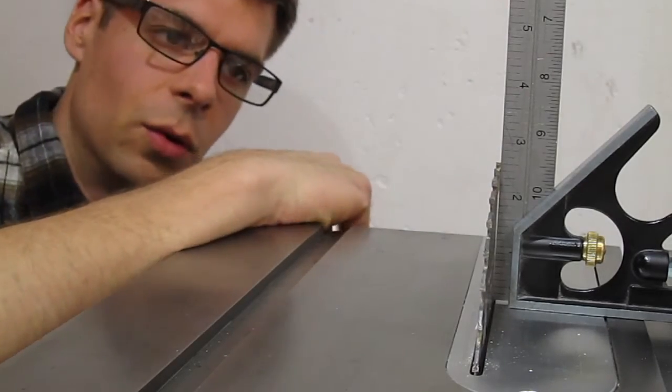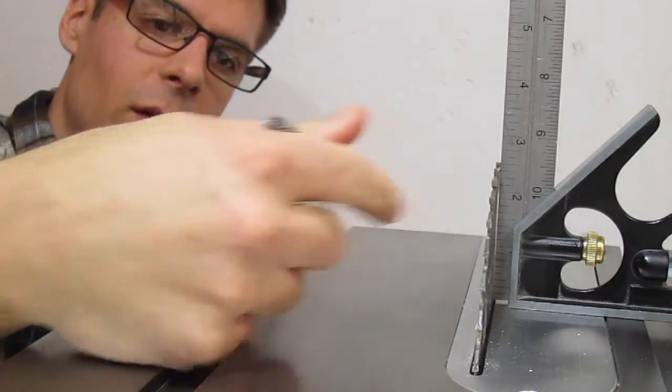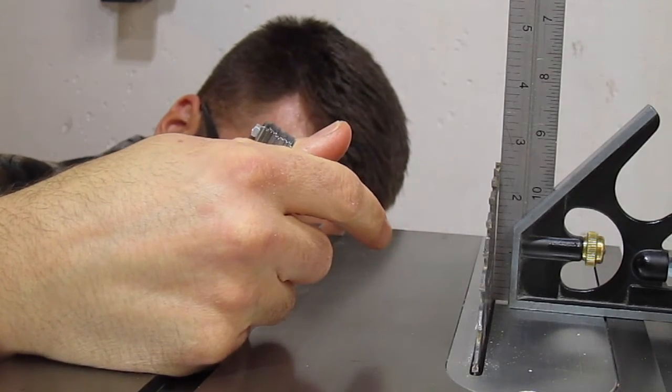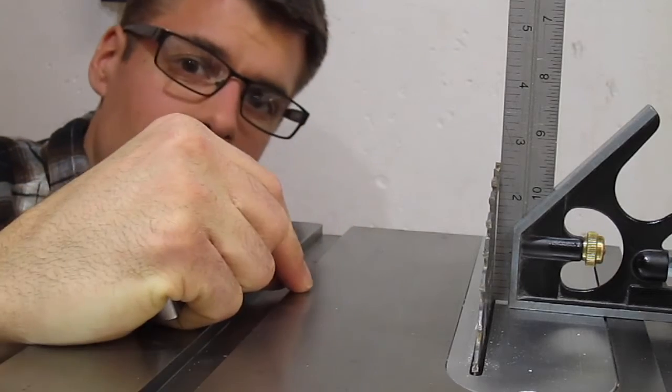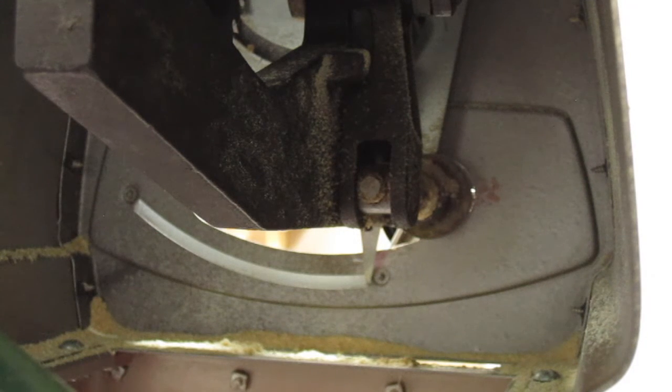So what I'm going to have to do, because the normal adjustment will not get it all the way to ninety, I'm going to have to see if I can adjust the stop underneath the saw, if there is a stop. Looking in the back of the saw, I do not see something that is easy to adjust when the saw is all put together. So I think what I'm going to have to do is take the top off.